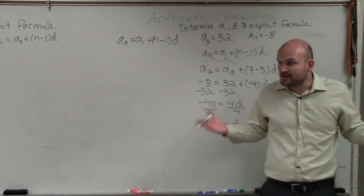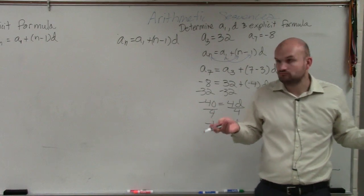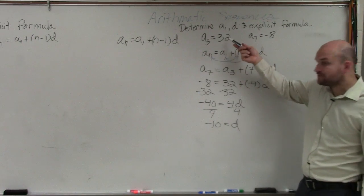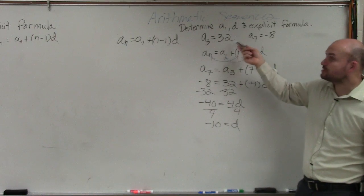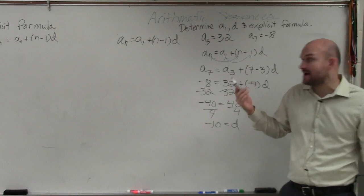So do we have a value in the sequence that we know? We know a sub 3 now, right? A sub 3 is 32. We also know a sub 7 equals negative 8. We can use any value that we want to. It doesn't matter.